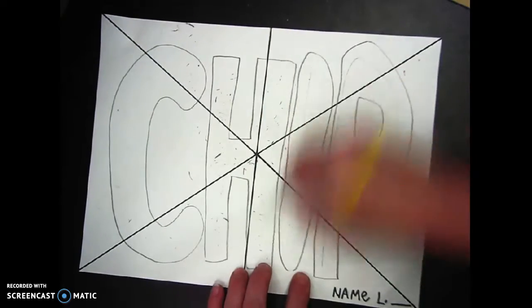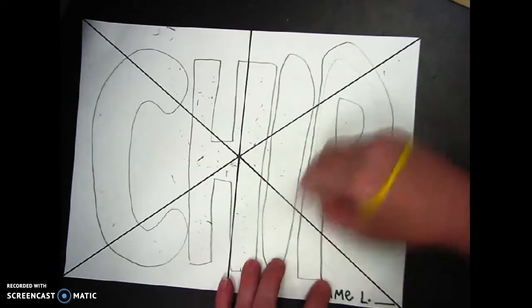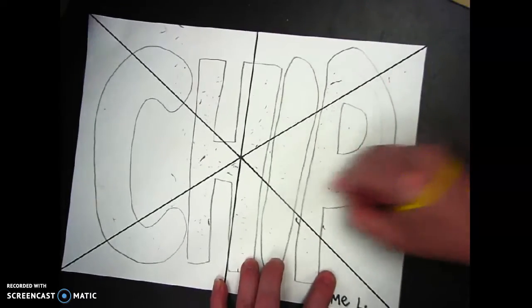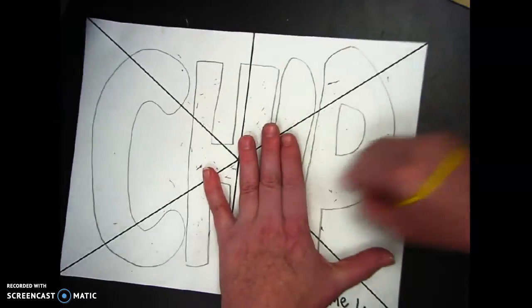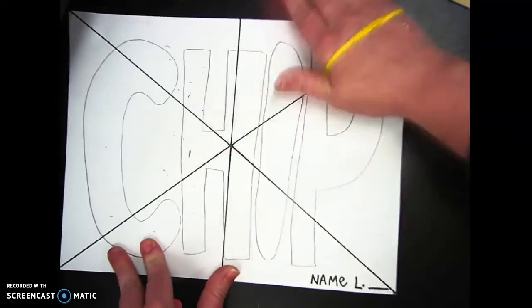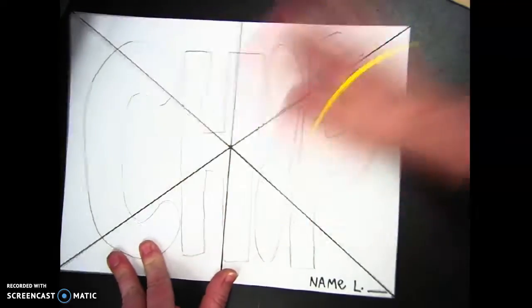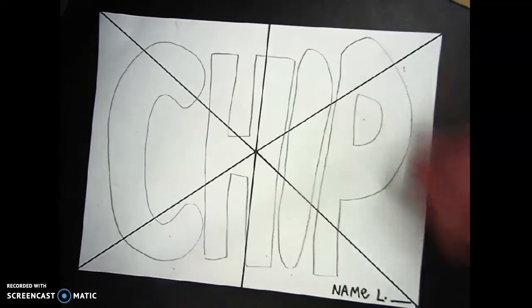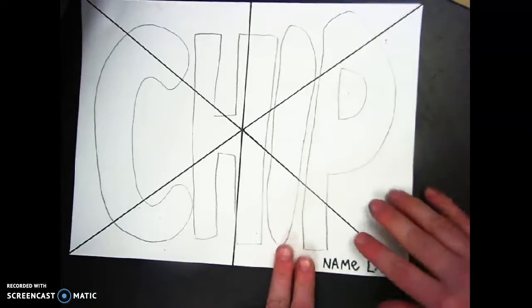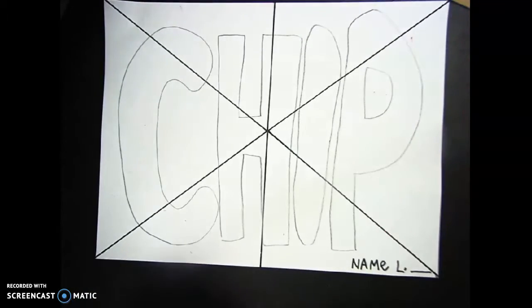I'm just going to blow the eraser bits away. I have my block and bubble letters. Some of you may already know how to make block and bubble letters. If you already know how to do it, then by all means, don't take the long route.